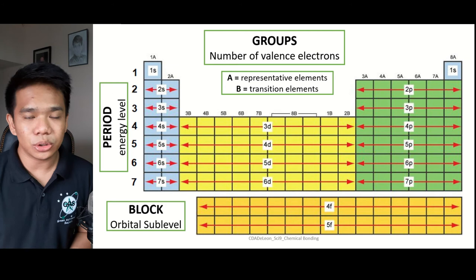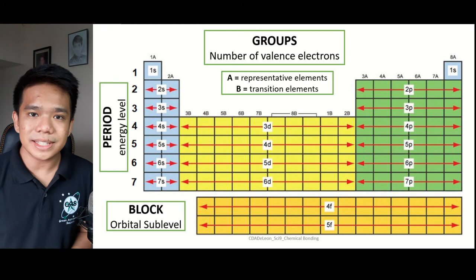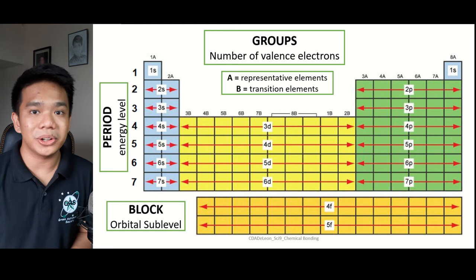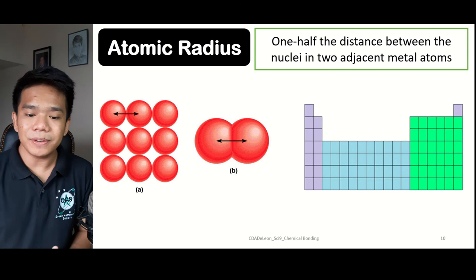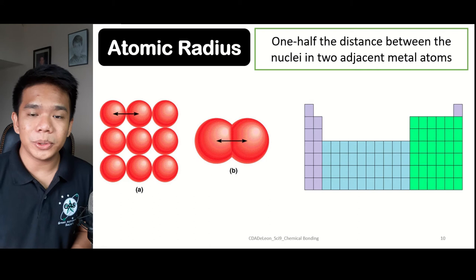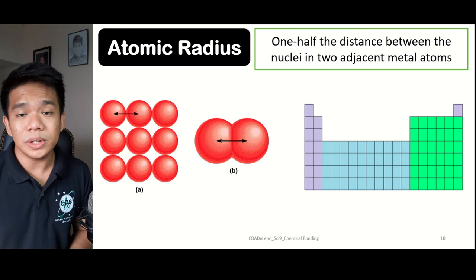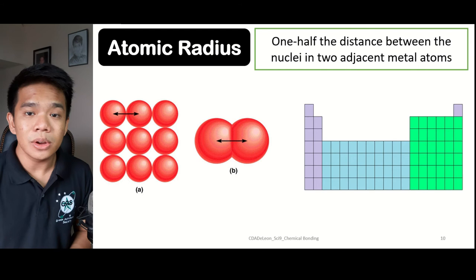Now, how can we describe the different properties of elements within the periodic table? We will go to the different periodic trends — how the properties of the elements are arranged within the periodic table. We need to look at how these properties vary by examining their position, specifically how periodic trends change from left to right and from top to bottom.